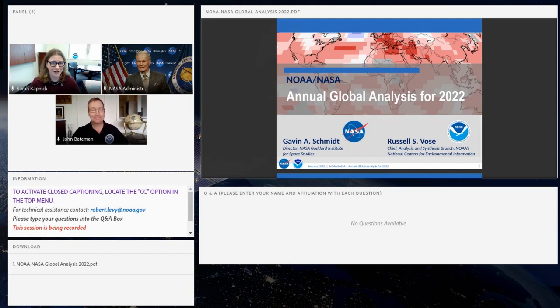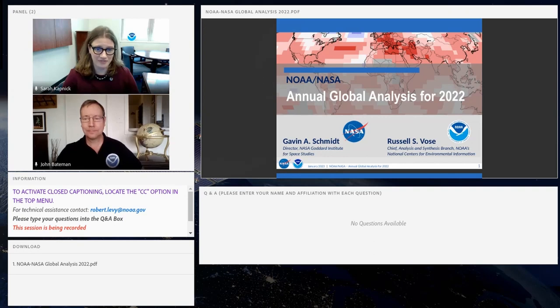Thank you, John. I'm excited to join our colleagues at NASA to highlight some of the ways 2022 stood out in the global climate record. I'm appreciative of this annual collaborative effort between our agencies. Producing analyses like this help us gain a collective understanding of how our climate is changing. Our agencies are able to provide this authoritative, global-scale climate data because of continuously collected and maintained observations. Weather, water, climate, and ocean observations are the backbone of NOAA's environmental science and stewardship mission.